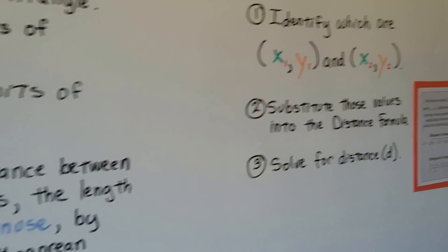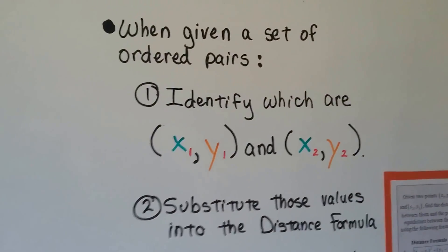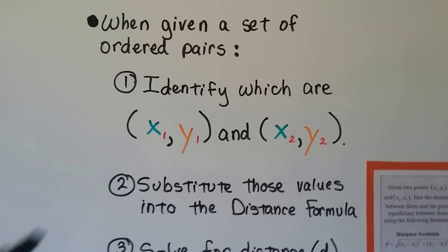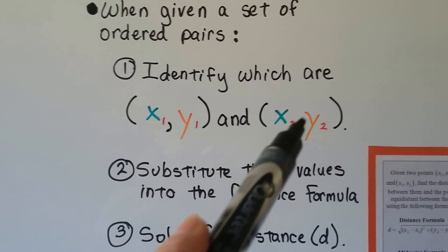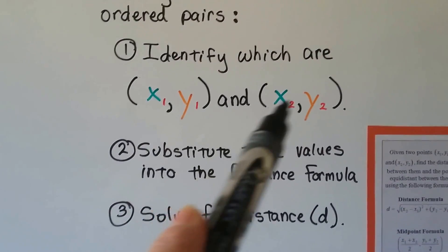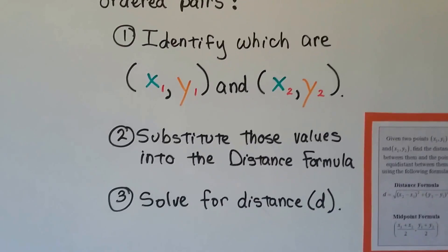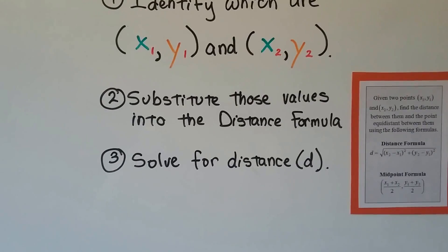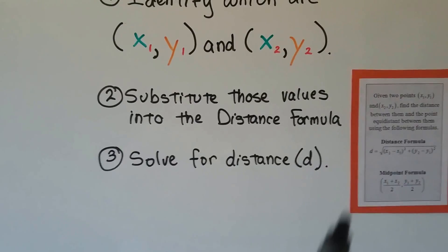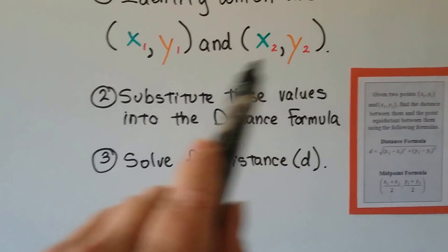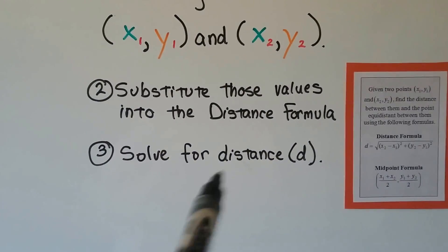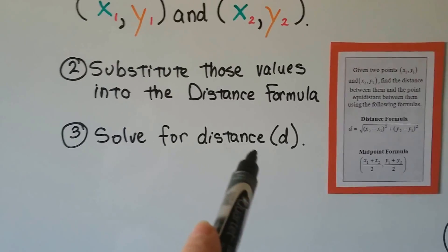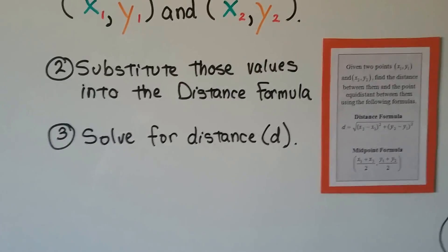When given a set of ordered pairs without a graph, we identify the first and second points using subscript notation and substitute those values into the distance formula, solving for D. We do our subtraction, addition, and multiplication, find the square root at the end, and that equals D.